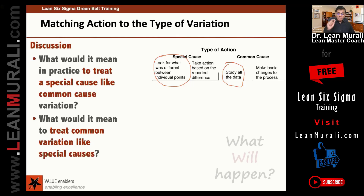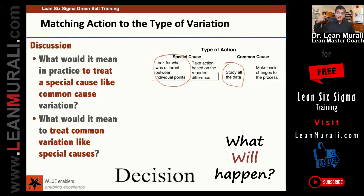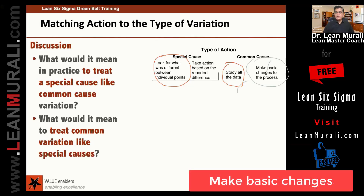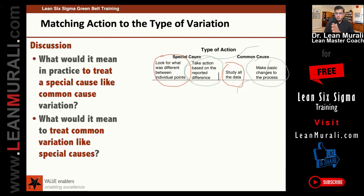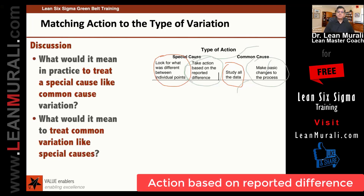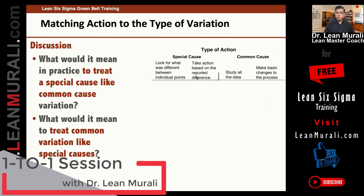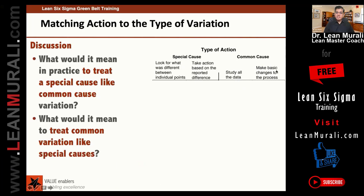What will happen if you start taking decisions between two points when actually the cause is common? The two types of action you can take are: make basic changes to the process, or take action based on a reported difference. So if these four statements are clear — one is look at the difference between individual points and study all the data; another is take action based on the difference reported between two individual points and, based on the study of all data, make basic changes to the process.